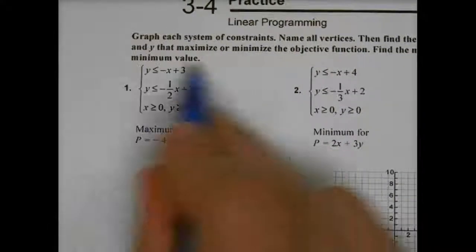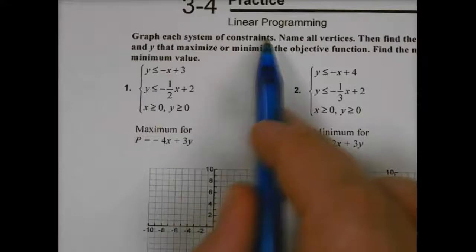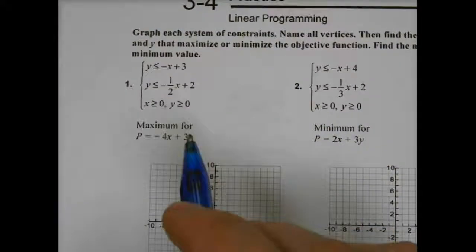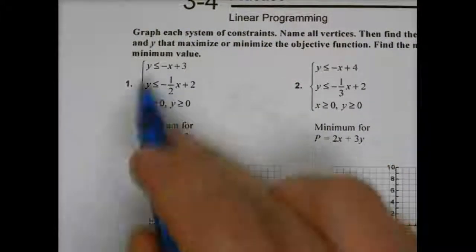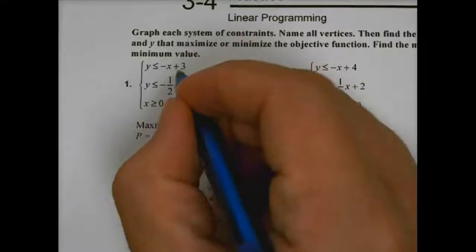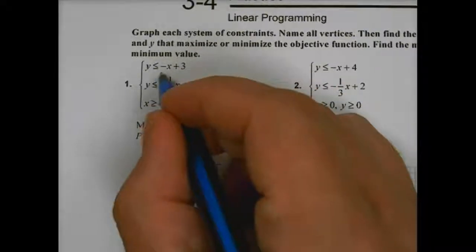These are our constraints. Graph each system of constraints. Essentially, our boundaries exist here. First step in these, I'm just going to go through and I'm going to graph each one of these lines.